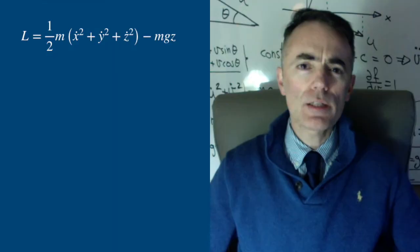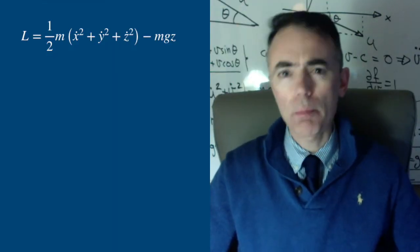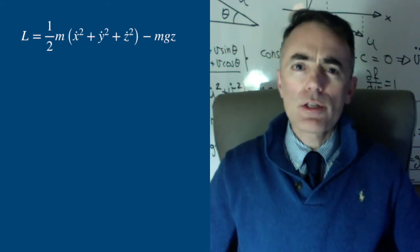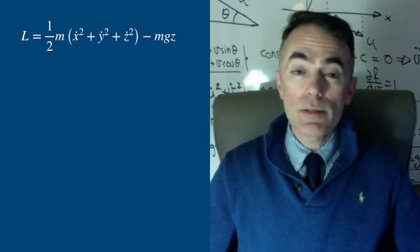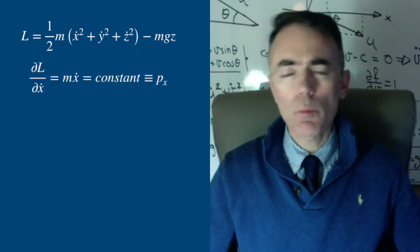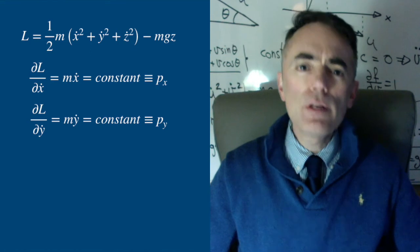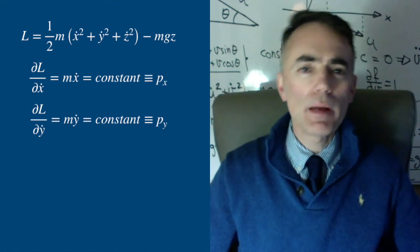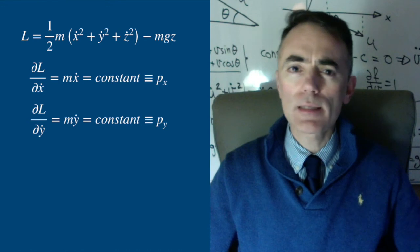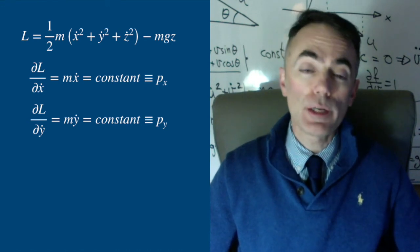Let's see this with the Lagrangian of a freely falling ball. The Lagrangian is one half of m times (x dot squared plus y dot squared plus z dot squared) minus mgz. There is no dependence on x and y, so both the partial of L with respect to x dot and with respect to y dot are constant — these are the linear momentum in the x and y coordinates. The x-momentum px and py for these particles do not change.